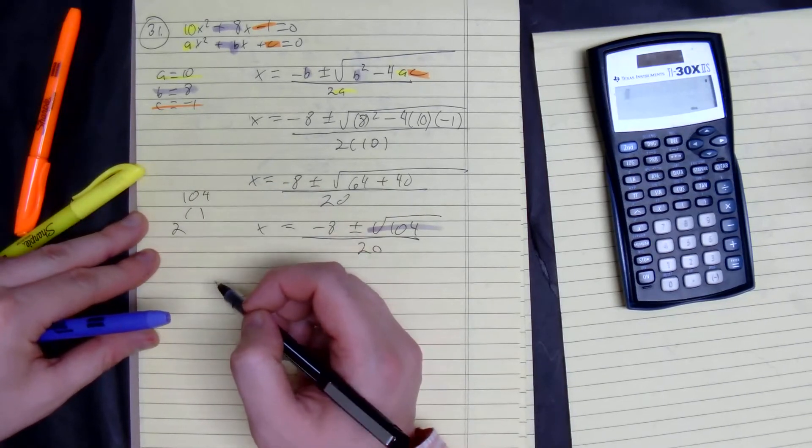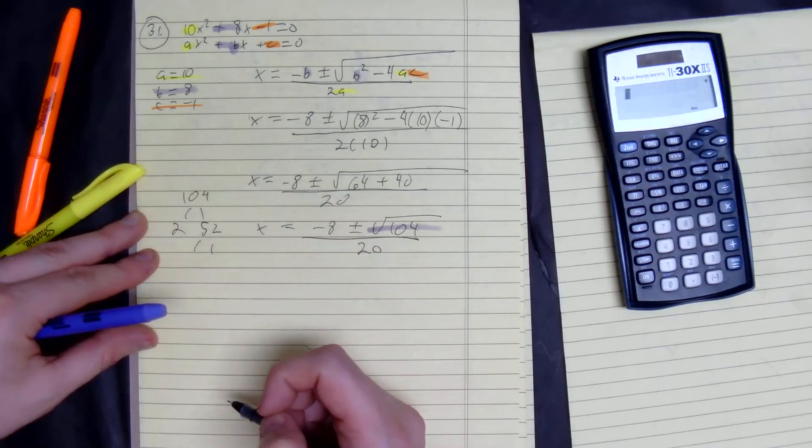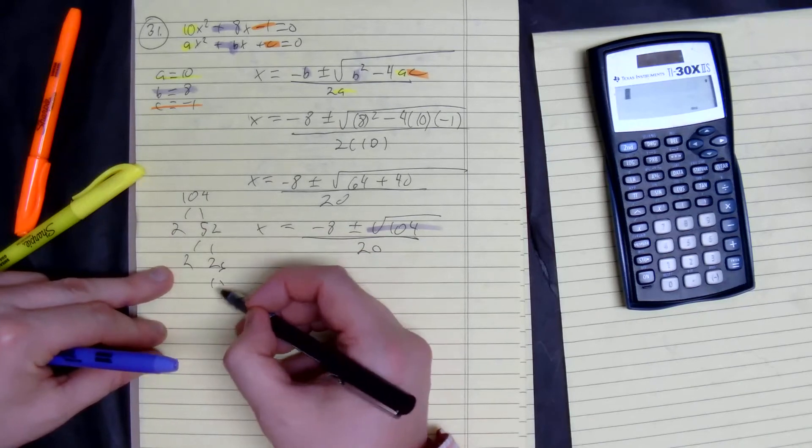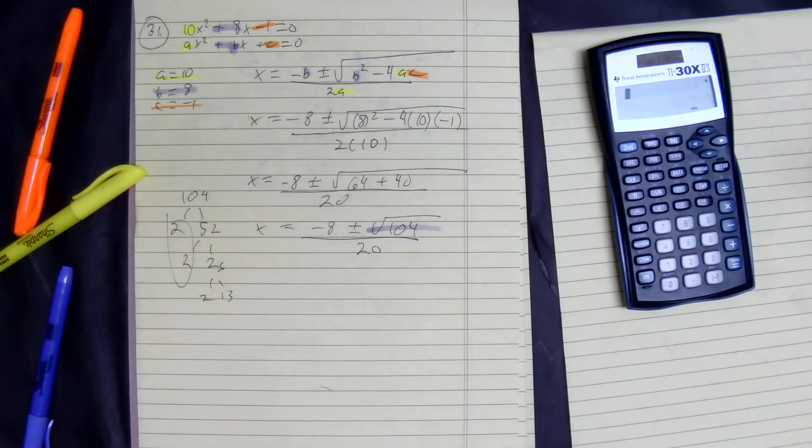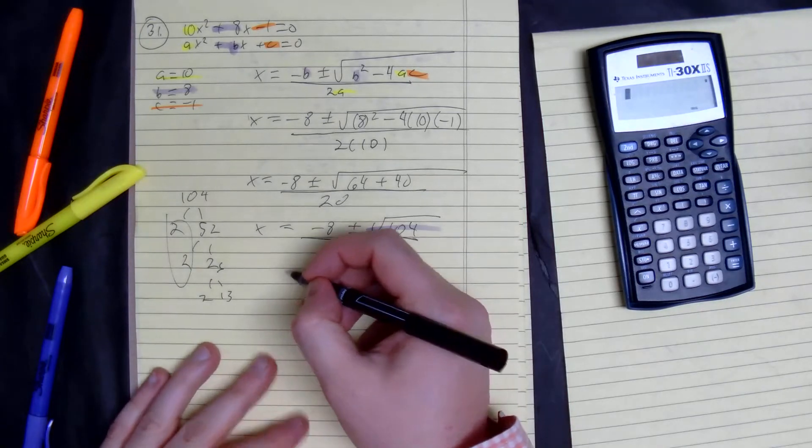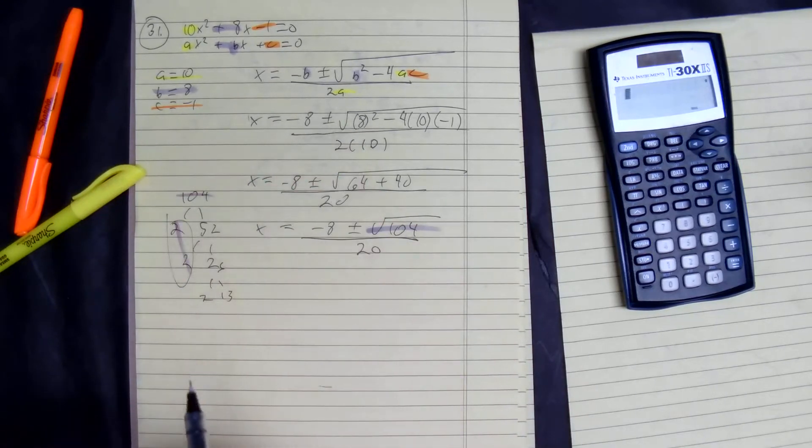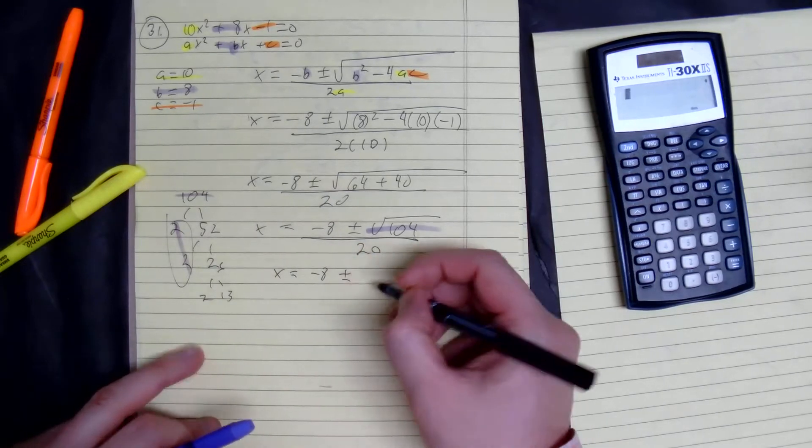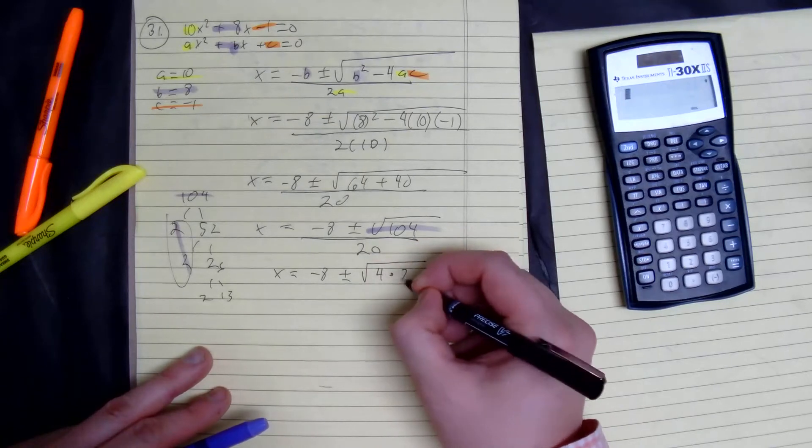So we get 2 and 52, and then we get 2, 26, 2, 13. So I didn't pick up on it right away, but that was divisible by 4. So we get x equals negative 8 plus or minus the square root of 4 times 26.